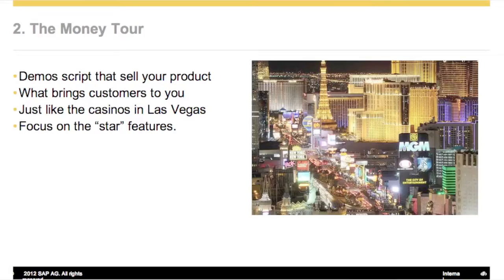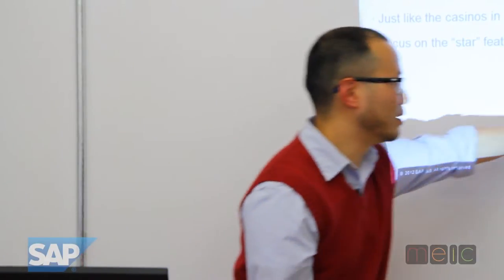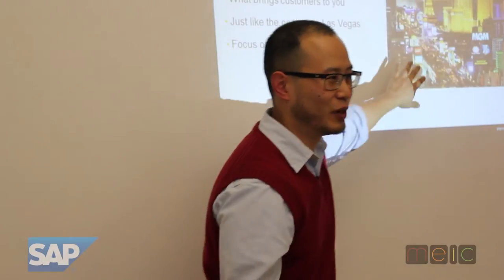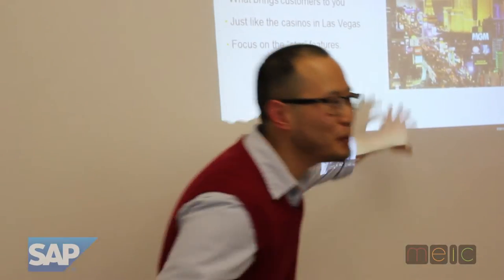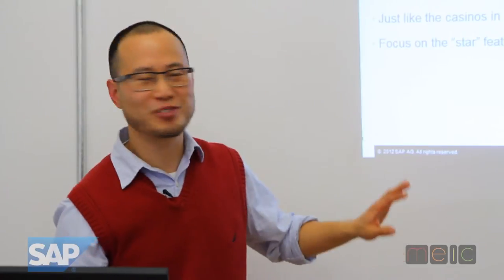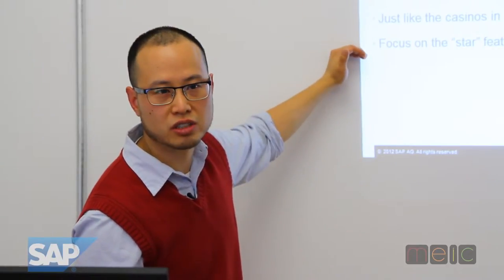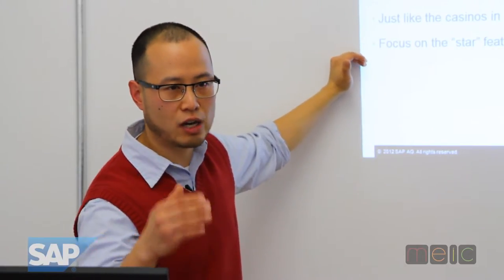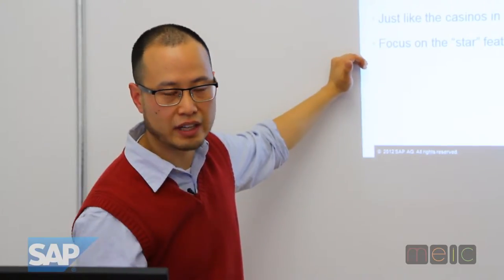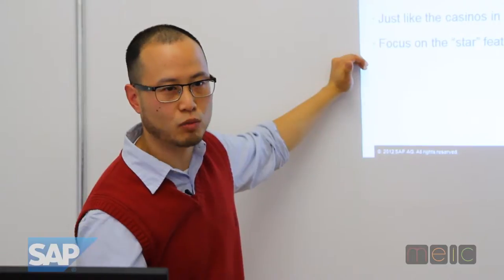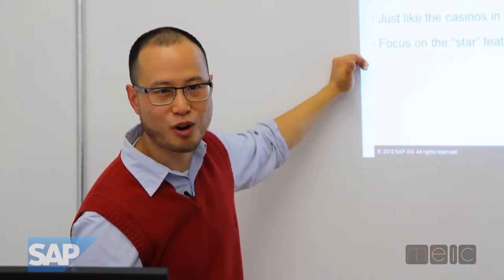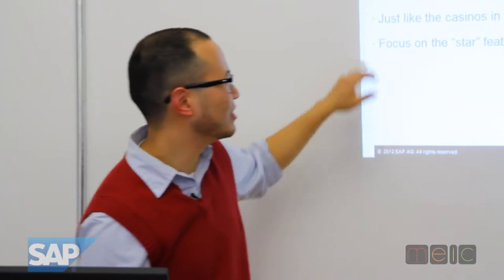Next is the money tour. These are the things that bring people to your application or portal — what makes users come to you, that golden thread. For example, in Vegas it's the Strip Casino — maybe you can visit the Hoover Dam, but most people go to the casino. What brings customers to you? Focus on the star features. This has to do with prioritization — those features that differentiate you or are core to the user. Withdrawing money from an ATM is a star feature of an ATM. That's the money tour.